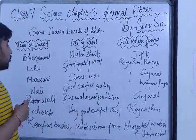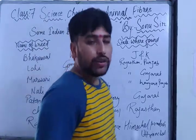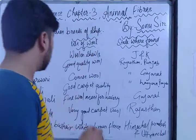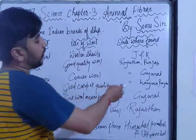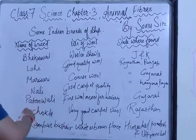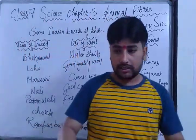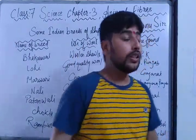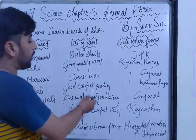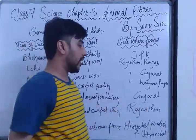The third breed is Marwari — it is a coarse wool, meaning it is very rough and tight. It is found in Rajasthan and Gujarat. The fourth breed is Nali — it is a good carpet quality wool. Carpets are also made from wool. Nali sheep are found in Rajasthan, Haryana, and Punjab.